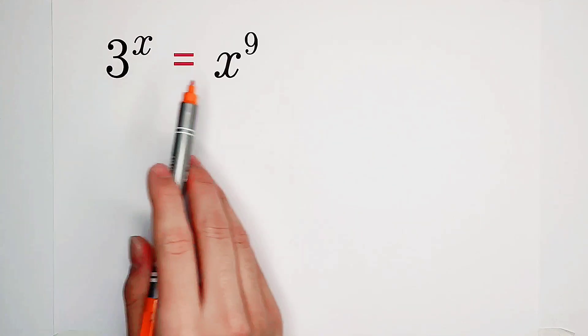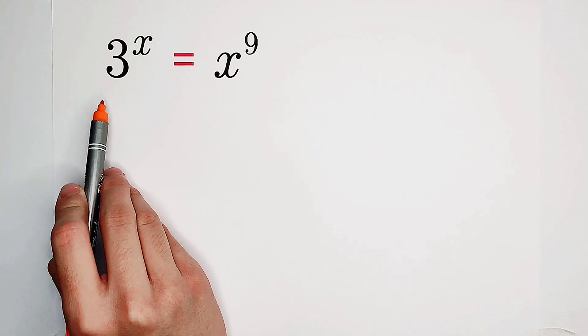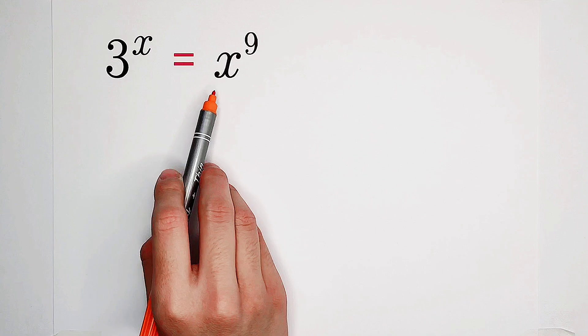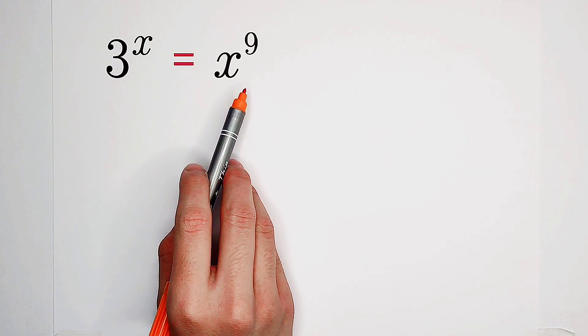Today, we're going to solve this fantastic equation. 3 to the power of x equals x to the power of 9. How should we solve it?